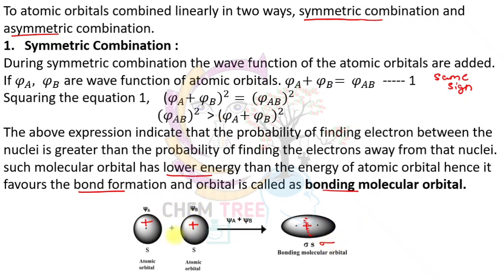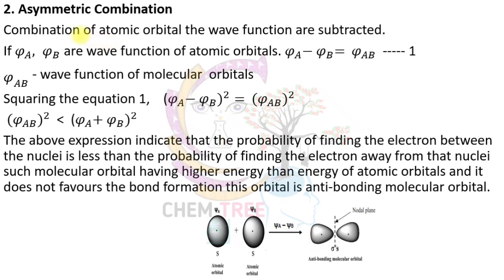In asymmetric combination, the wave functions of atomic orbitals are subtracted: ψ_A − ψ_B. The probability of finding the electron between the nuclei is less than the probability of finding it away from the nuclei. This gives an anti-bonding molecular orbital, which does not favor bond formation, and its energy is higher than that of the bonding molecular orbital.